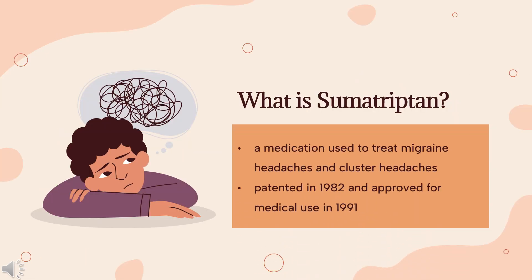Sumatriptan, sold commonly under brand names Imitrex and Treximet among others, is a medication used to treat migraine headaches and cluster headaches. It is taken orally, intranasally, or by subcutaneous injection. Therapeutic effects generally occur within 3 hours. Sumatriptan was patented in 1982 and approved for medical use in 1991. It is on the World Health Organization's list of essential medicines and is available as a generic medication.